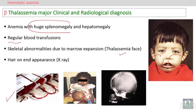On radiological examination, you can see the 'hair on end' appearance, which shows expansion of the marrow and the bone outside the skull.